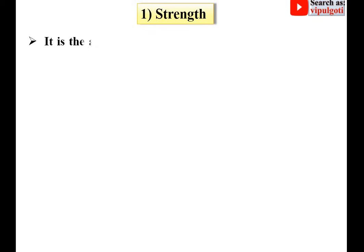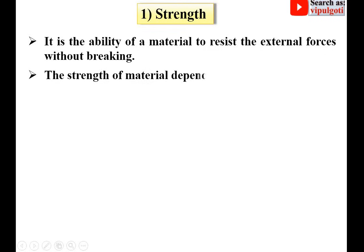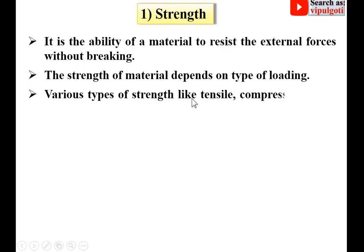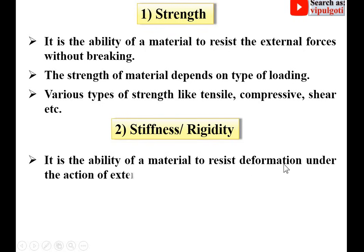First, strength. It is the ability of a material to resist external forces without breaking. The strength of a material depends on the type of loading. Various types of strength include tensile strength, compressive strength, shear strength, etc. The key point for strength is the ability of a material to resist external forces. Second, stiffness — sometimes known as rigidity — is the ability of a material to resist deformation under the action of external forces.